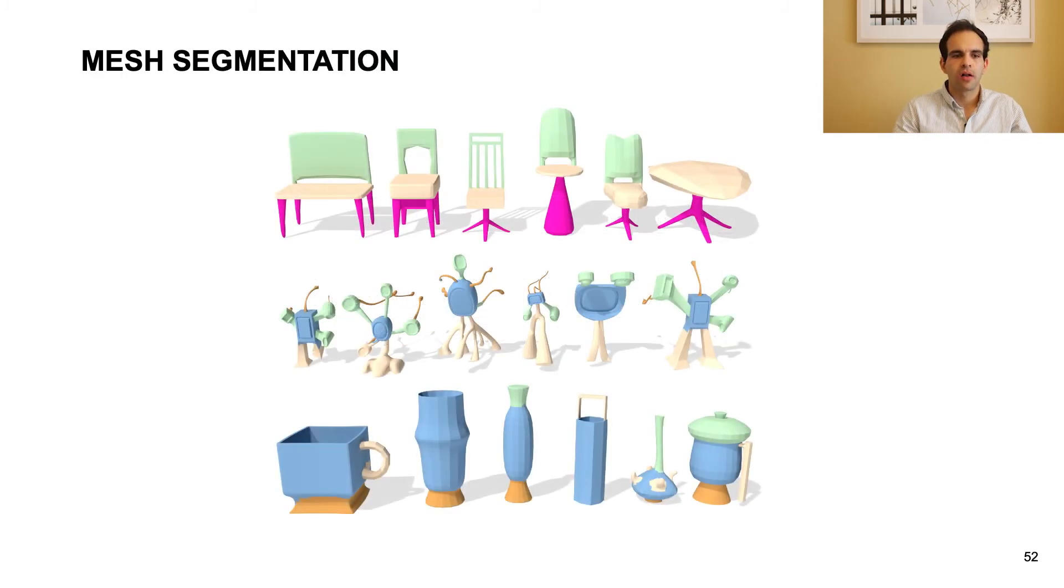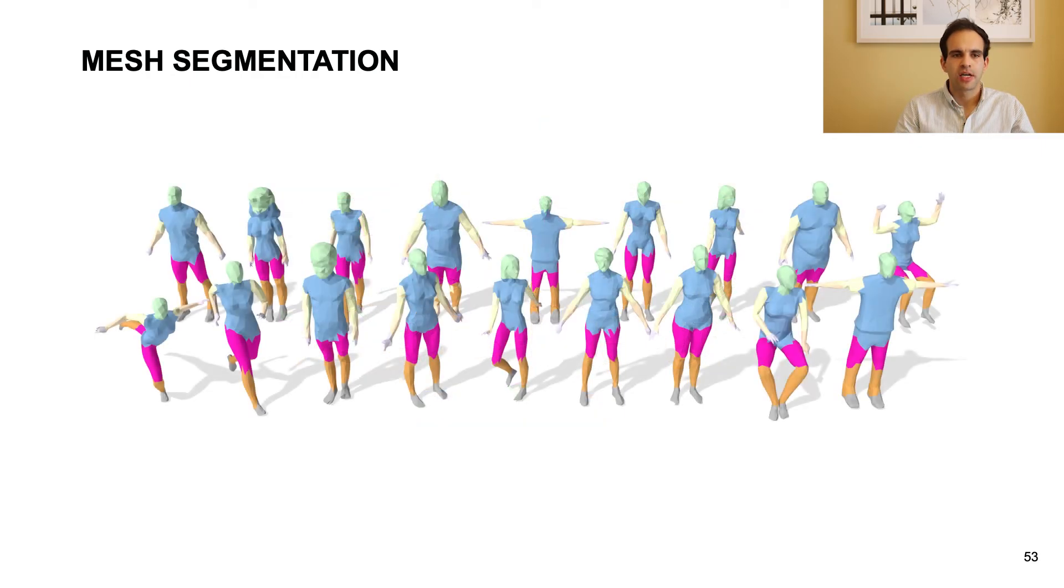Next, we train a model for semantic segmentation of the ShapeCoseg dataset. We show some results from the chair, alien, and vase test sets. Our model obtains segmentation accuracies that are comparable to state-of-the-art mesh learning approaches. We also perform semantic segmentation of the downsampled human body dataset. This version of the dataset, with meshes decimated to a relatively small number of triangles, is standard among mesh deep learning models.